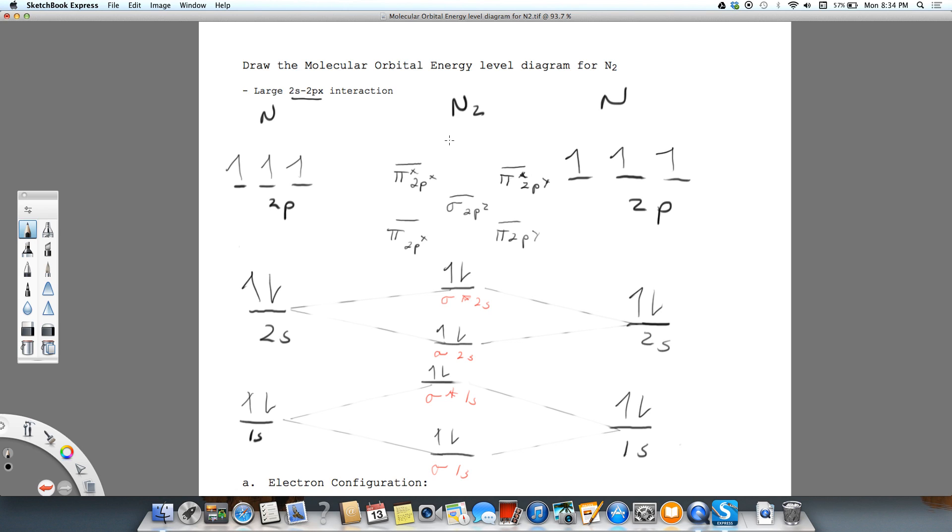And then lastly, we'll have our sigma star 2pz. And so that's the order of how they're filled up when we have high or large 2s, 2p interaction.